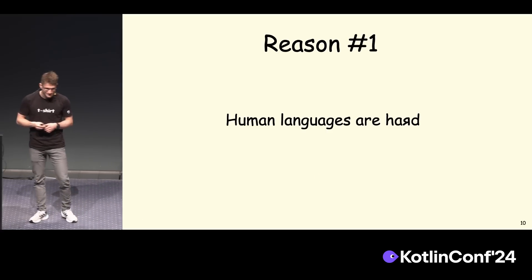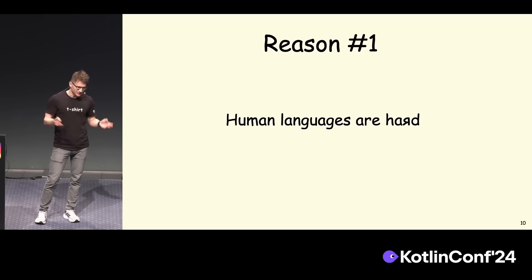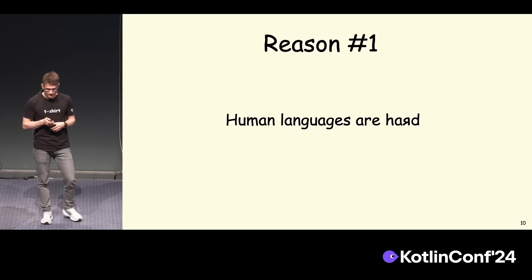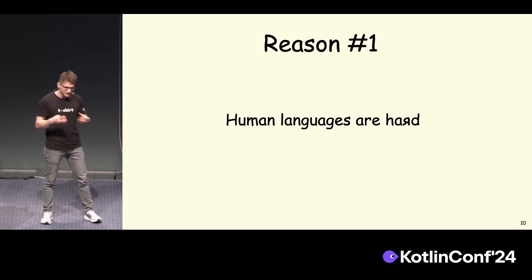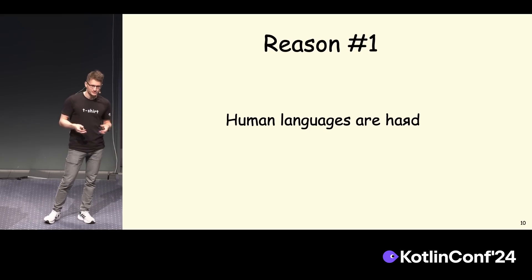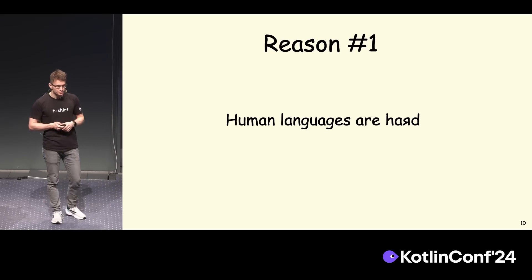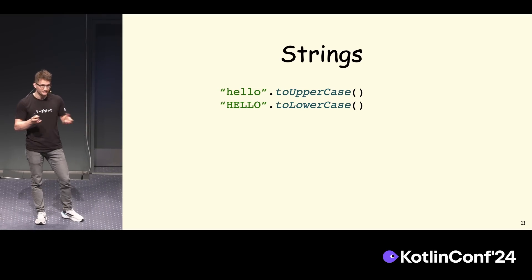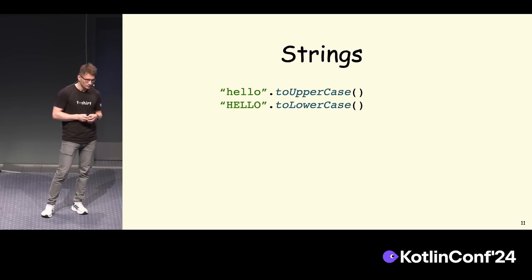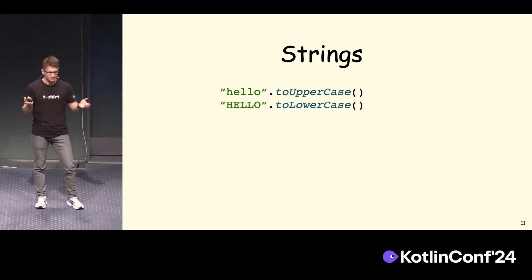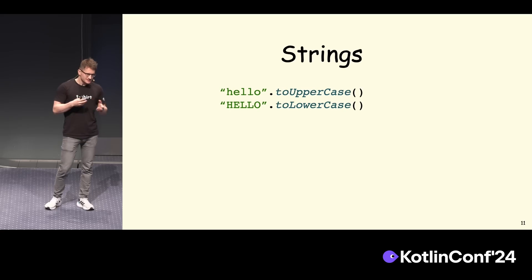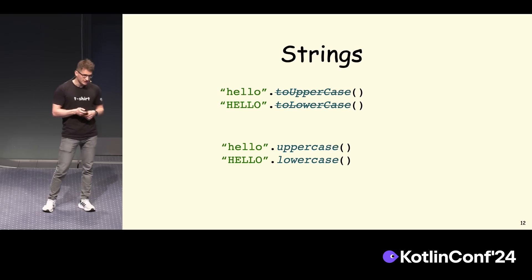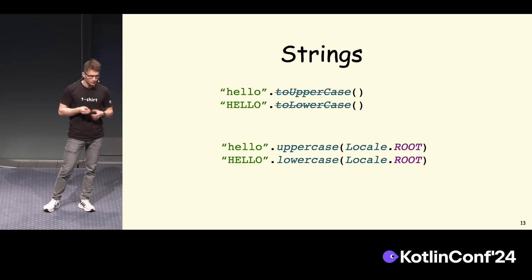We tend to forget about that because we communicate in English, write our code in English, and probably write our documentation in English. But it's still our responsibility as a language to support all languages, all cultures, all locales. So what are we going to do? We decided that if even our compiler engineers, who sit in the room next to ours, cannot figure that out, it's probably not the best behavior. We should do something. But we can't just change it — it's a breaking change. So after some back and forth discussions, we decided to deprecate those functions and provide replacements: uppercase and lowercase. These fix the problem because they use something called root locale, which doesn't depend on where the computer is.